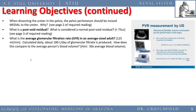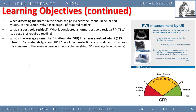What is the average glomerular filtration rate in an average-sized adult? About 125 cc's per minute, or about 180 liters per day — which is about 30 times your average blood volume. So your kidneys filter about 30 times your average blood volume every single day, with a normal GFR of 125 milliliters per minute.